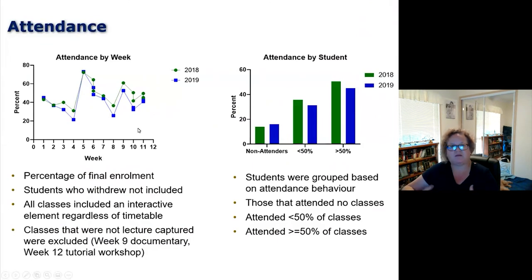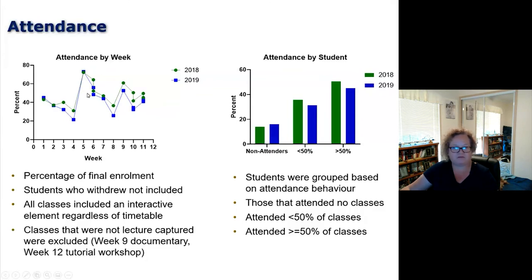Just to set the scene — this is not ECHO360 analytics but the class roll circulated over 12 weeks. Attendance fluctuates quite a lot; on average around 45% of the cohort was physically present across 12 weeks, with some weeks substantially more and some less. What's really obvious is how consistent the pattern is between the two years — despite week-to-week fluctuation, the pattern is remarkably similar across 2018 and 2019.